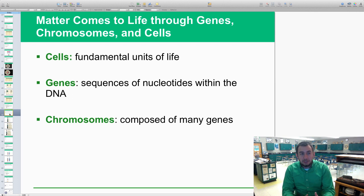This is a review of biology. We hit some chemistry, let's talk about some biology. Matter comes to life through genes, chromosomes, and cells. Cells are the basic unit and structure of life. Genes are sequences of nucleotides—the A's, T's, C's, and G's, those nitrogen bases matching up along with the deoxyribose sugar and the phosphate groups—and that makes up DNA. Chromosomes are composed of many genes, tightly packed information, basically DNA and genes all wrapped up into chromosomes.